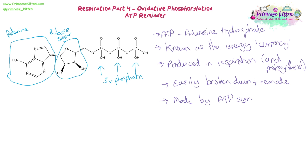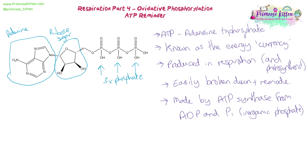ATP is made by the enzyme ATP synthase using ADP — that's two phosphates — and adding an inorganic phosphate to make ATP. In respiration, this is the part we're going to focus on: oxidative phosphorylation, where we make the majority of ATP produced from respiration. Most of that happens in the final stages in the folds of the inner membrane of the mitochondria, and that's where we make most of the ATP through chemiosmosis, which we've already covered in photosynthesis.